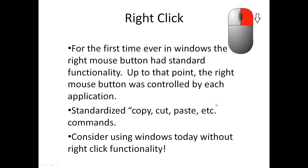Another thing that came about with Windows 95 was the right-click. For the first time in Windows, the right mouse button had standard functionality. Up to that point, the right mouse button was controlled by each individual application, and many applications didn't even use it. You could right-click in one program and it would perform an action, while another program would pop up a menu with completely different items — there was no standardization. Windows 95 standardized items like copy, cut, paste, and similar commands into right-click menus. Try using Windows today without that right-click functionality — it really changed how you interface with the computer.